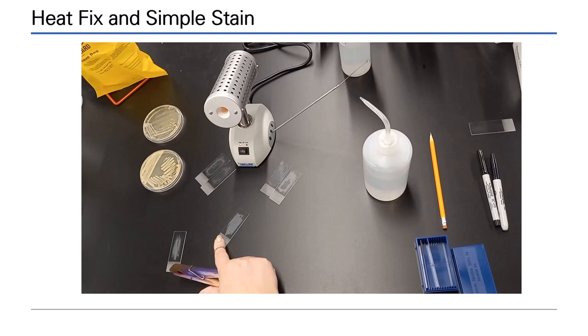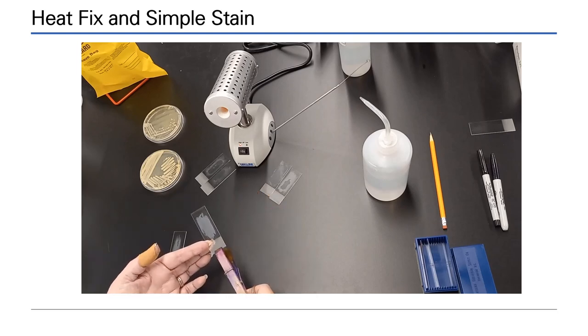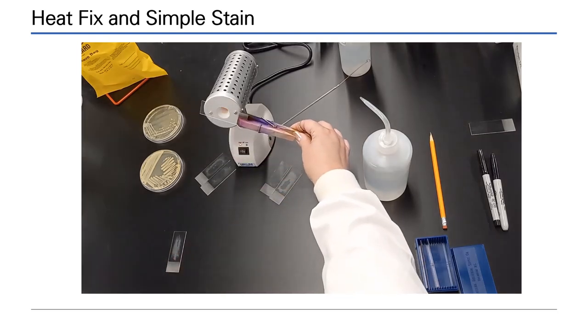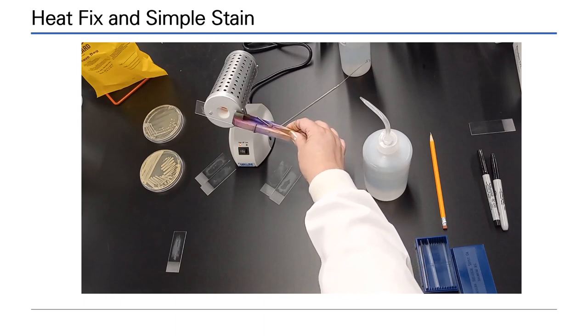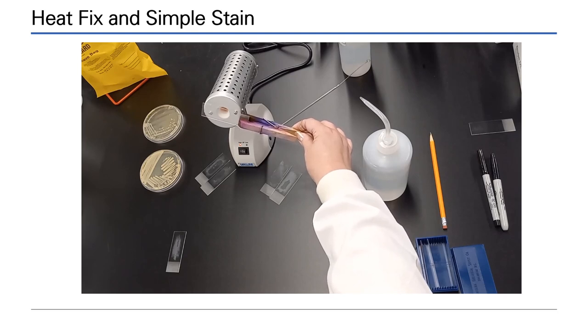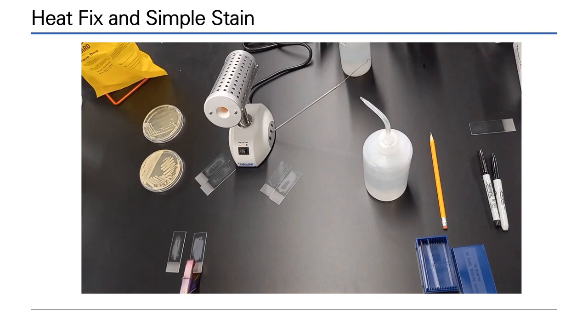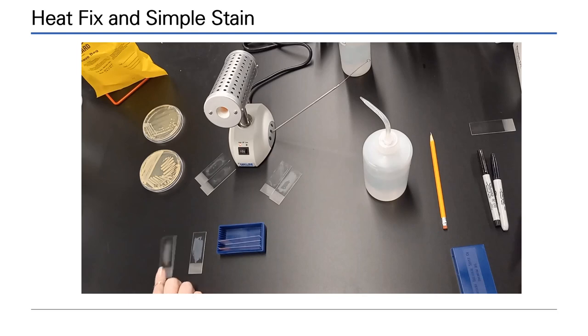Before staining a smear, you must heat-fix the cells so that they remain on the slide. Holding the slide in a peg, with the specimen facing away from the incinerator, apply heat at the mouth of the incinerator for up to 10 seconds. During this time, the heat will cause the proteins in the cell walls to stick to the glass slide. Allow the slides to cool. A heat-fixed smear can be stored for weeks before staining.